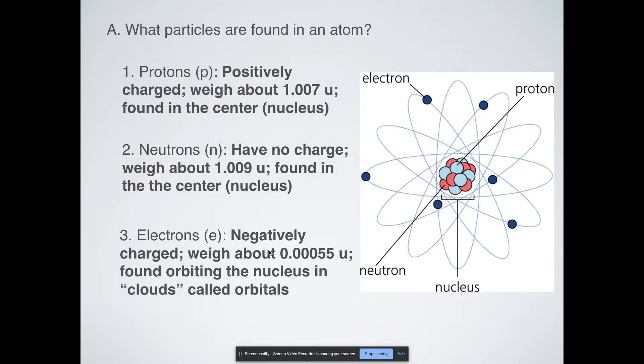And then electrons, abbreviated as e or e with a little minus sign, are negatively charged. They weigh a tiny fraction of a proton though, 0.00055 atomic mass units. That's really small. And they're found orbiting the nucleus in clouds called orbitals. It's not like they go in circles or in ellipses like planets. They exist in a nebulous region that we call an electron cloud, and they can move pretty much anywhere within that orbital.